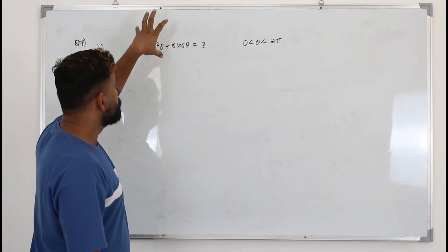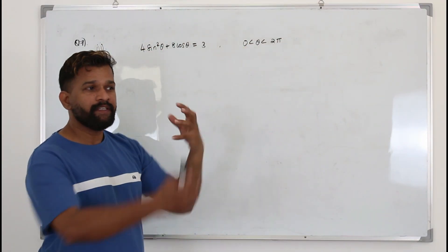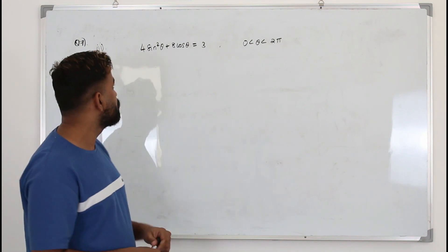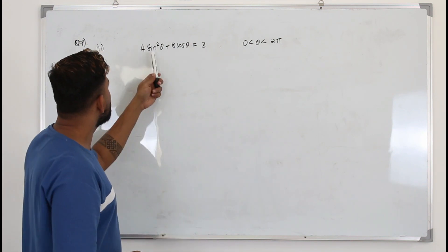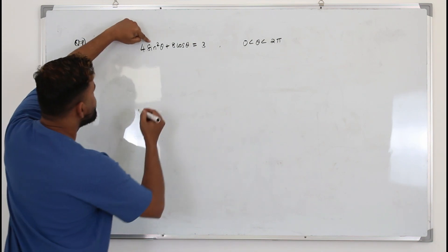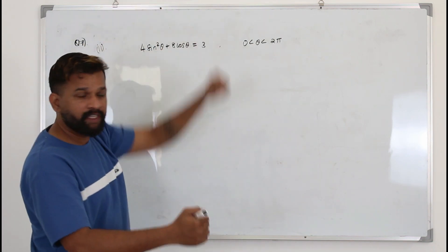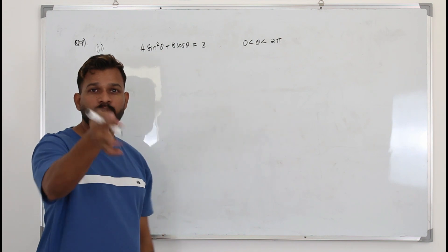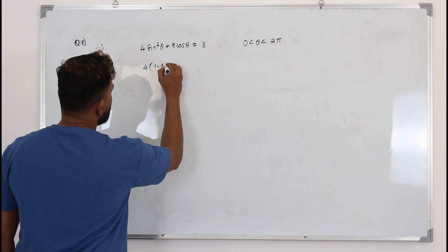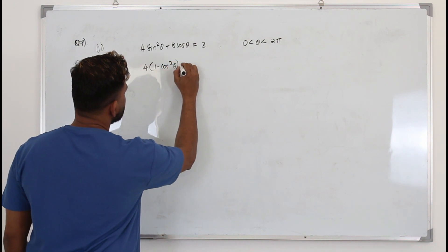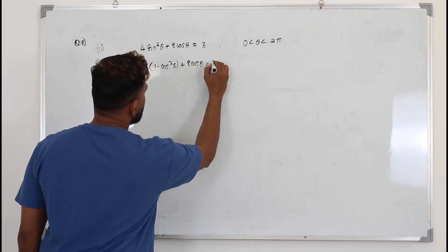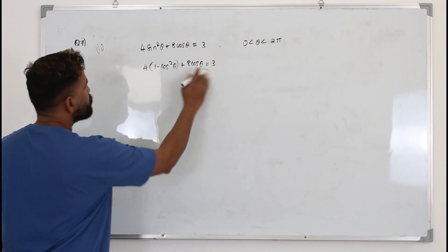The first step to solving a trigonometric equation is converting them into a single trigonometric function — you are not supposed to have sine and cosine together. So I'm going to replace sine squared by using the identity sine squared plus cos squared equals 1, writing sine squared as 1 minus cos squared.